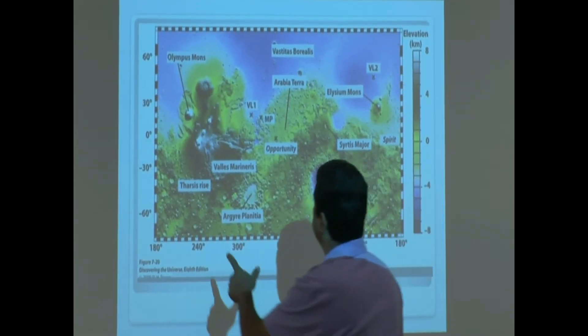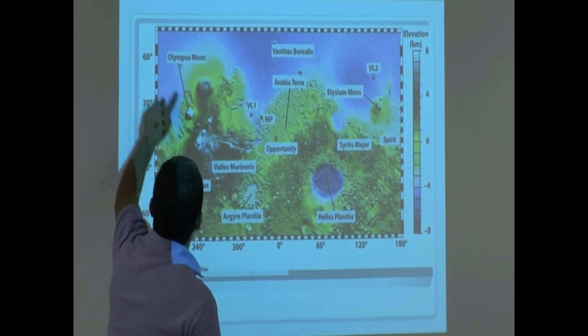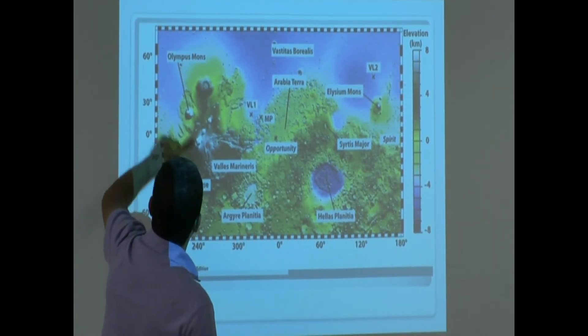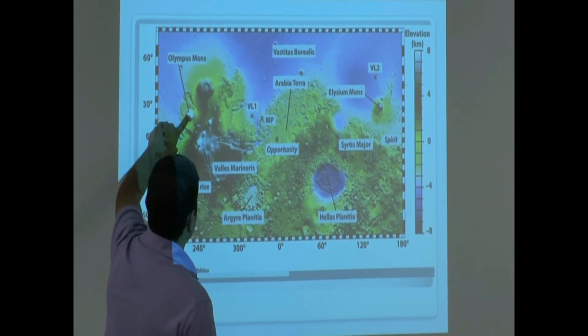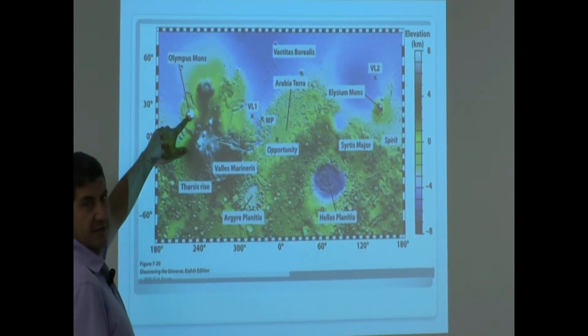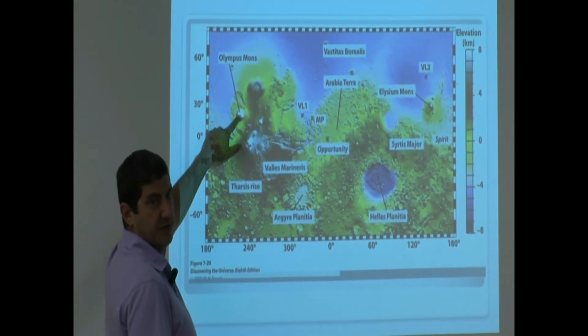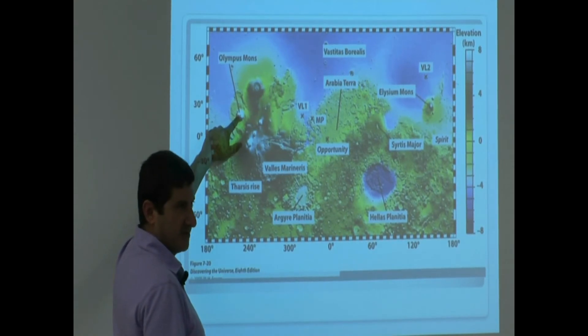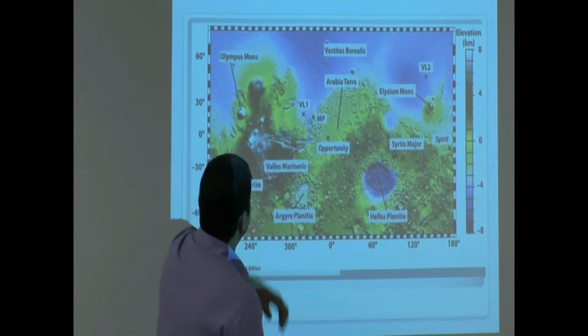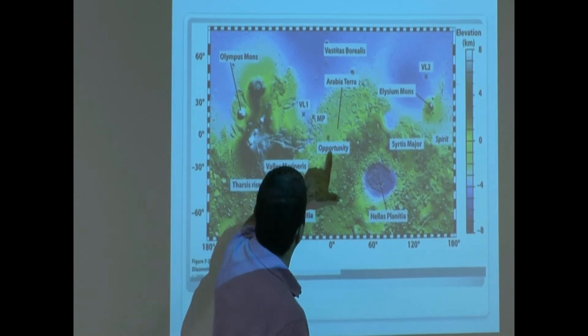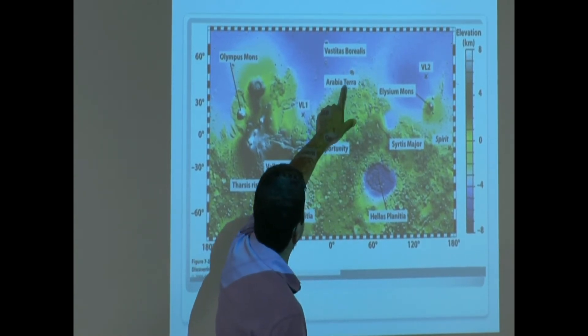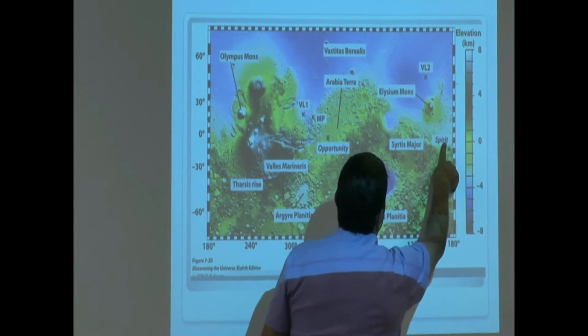So this one is showing you the Tharsis region. You see here? This one, Tharsis rise. That's Olympus Mons. Now, it looks very small, but it's much, much bigger than our Mount Everest. It's huge. This is where Spirit and Opportunity are. You see Opportunity spacecraft landed there? There is Spirit, right there.